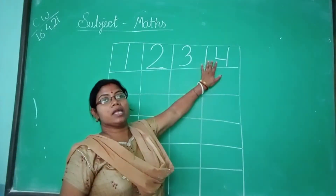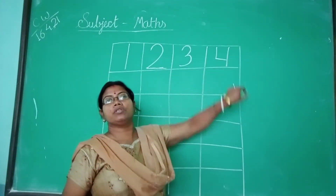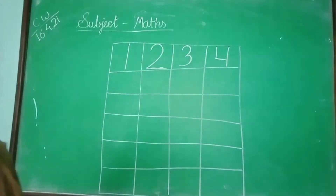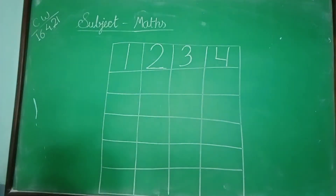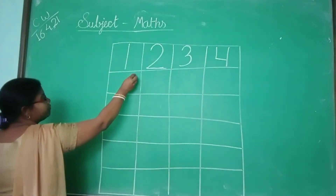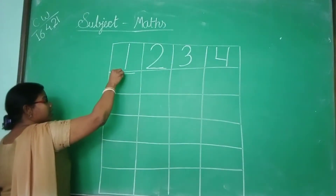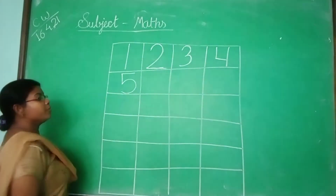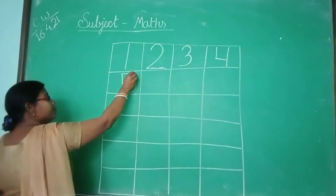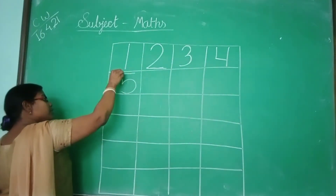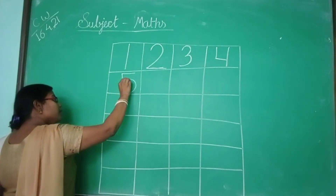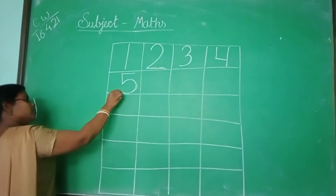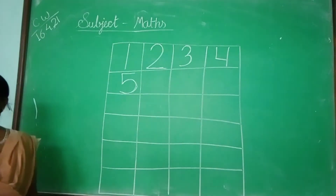Number 5. Sleeping line, slipping line, standing line, backward curve. See one more time. One more time — it becomes number 5.